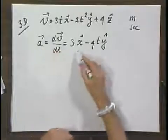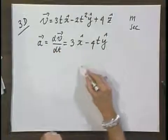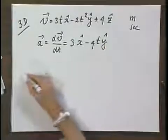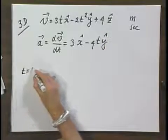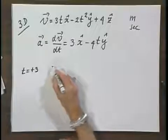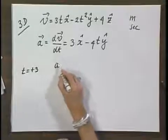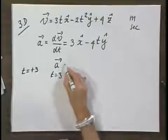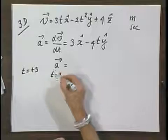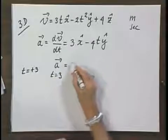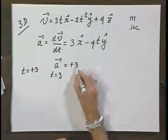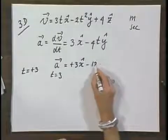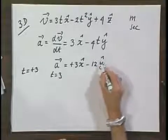So the acceleration has a component in the x-direction and has a component in the y-direction and has no component in the z-direction. If we take t equals plus 3, then we would have that the acceleration, which is a vector at t equals 3, at a particular moment in time, the instantaneous acceleration at t equals 3, would be plus 3x-roof minus 12y-roof.